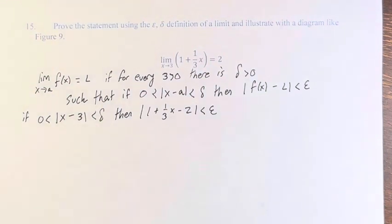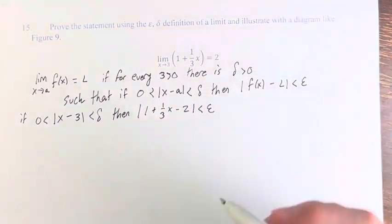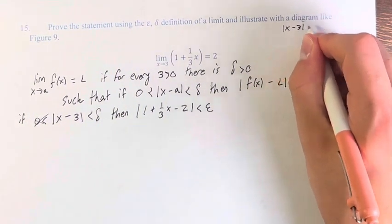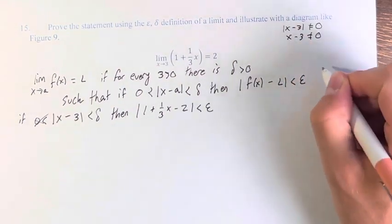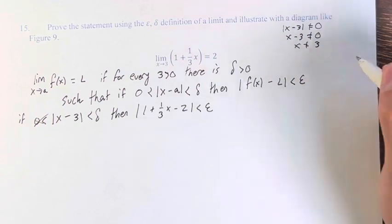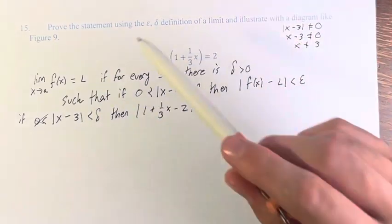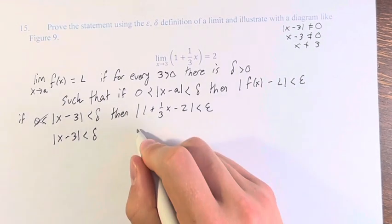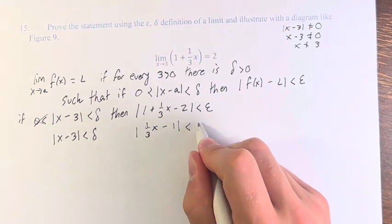To prove that there is a delta for every epsilon, we have to find a relationship between delta and epsilon. We can ignore the 0: if the absolute value of x minus 3 is greater than 0, that's only saying x minus 3 is not equal to 0, meaning x is not equal to 3. We're not worrying about when x equals 3 because this is a limit. So we have the absolute value of x minus 3 is less than delta, and one-third x plus 1 minus 2 gives minus 1, whose absolute value is less than epsilon.